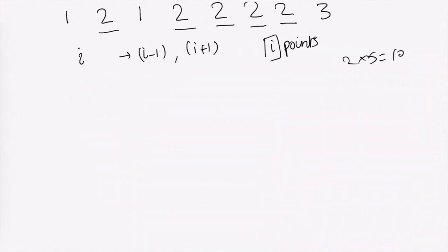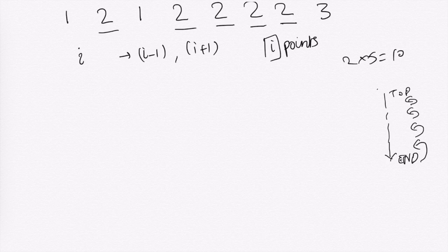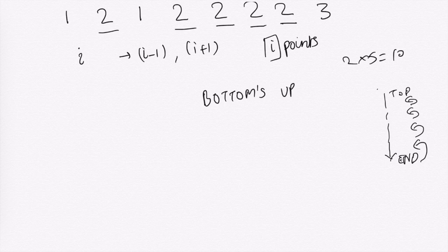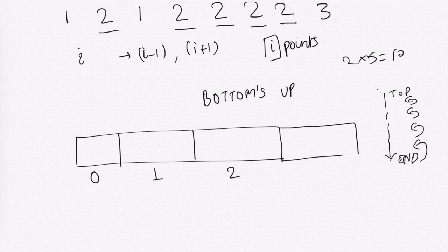Now let us look at how to solve this question. This is a bit different from what we have done so far. Previously we followed a top-down approach using recursion. In this solution we are going to use a bottom-up approach in which we build our solution from the start. If we look at this array — index 0, 1, 2, 3 — index 0 will always be 0 because the range is given as 1 to 10^5.